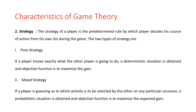The second strategy is a mixed strategy. In this, if a player is guessing as to which activity is to be selected by the other on any particular occasion, a probability situation is obtained and the objective function is to maximize the expected game. In the pure strategy, the deterministic situation is obtained and we get the objective function to maximize the game. In the mixed strategy, the probabilistic situation is obtained and we get the objective function to maximize the expected game. The mixed strategy is a selection among the pure strategies with a fixed probability.